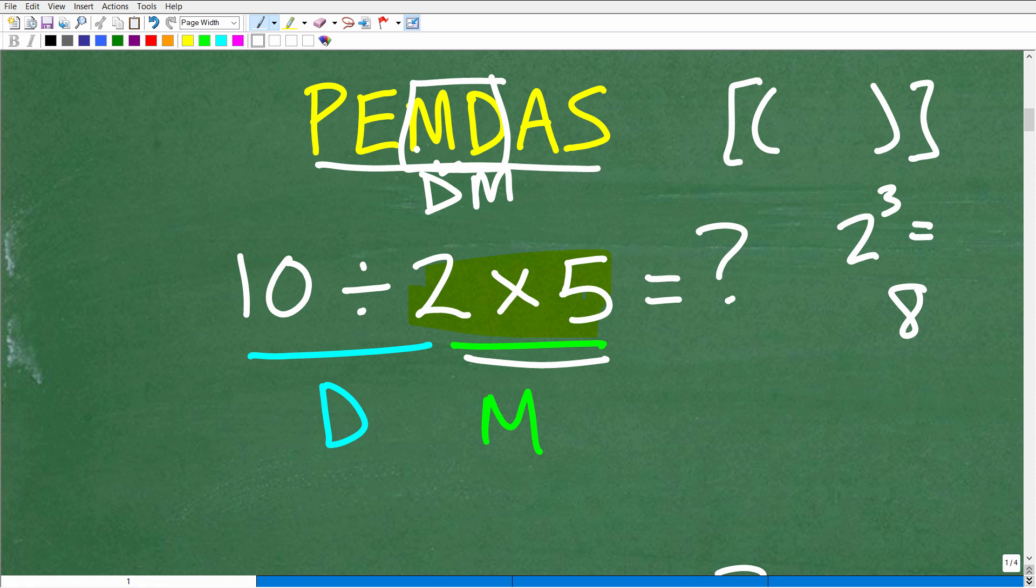So going to our problem now, this is going to obviously explain, for those of you that got this wrong, why you have to do division first. Okay, so 10 divided by 2. Oh, that's division. So that is before multiplication. Again, we're looking at this as a group.